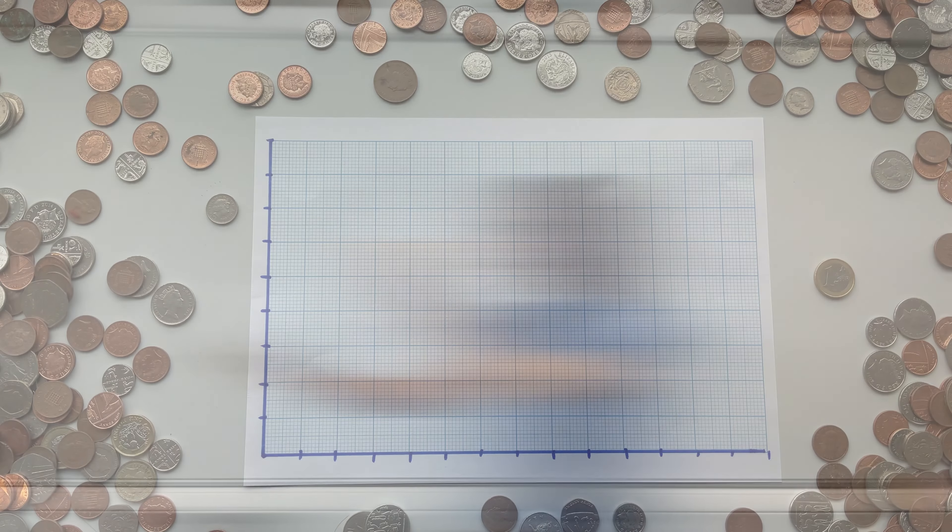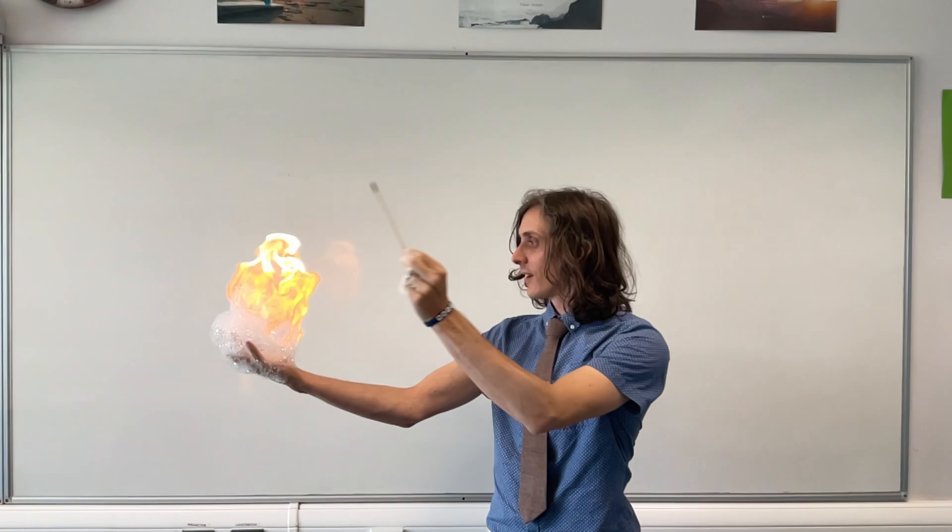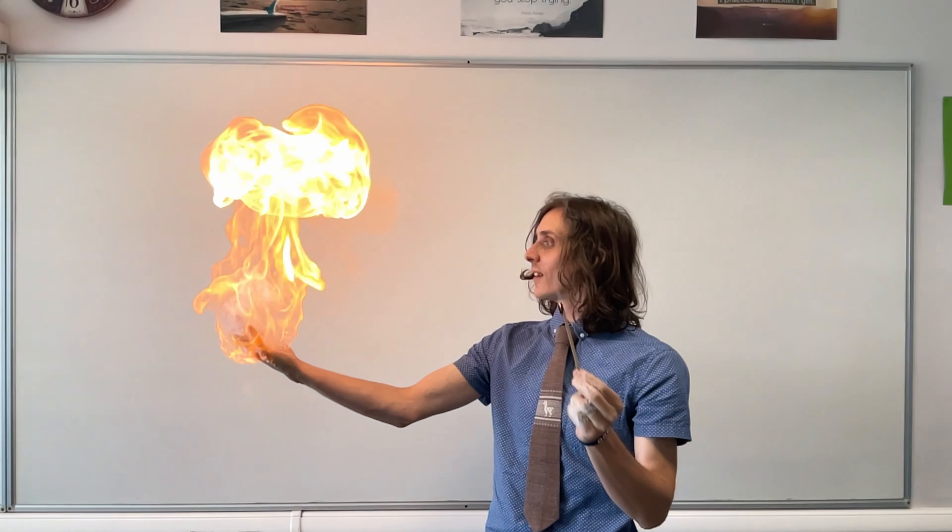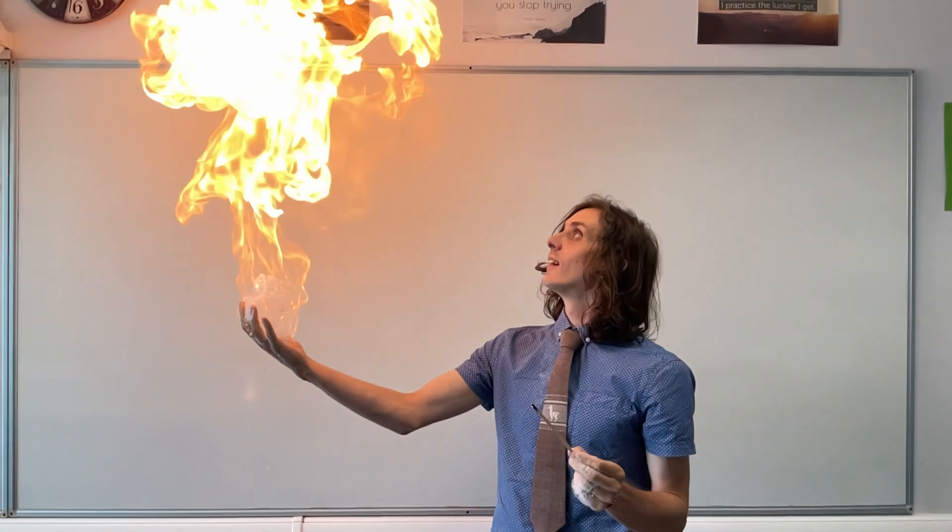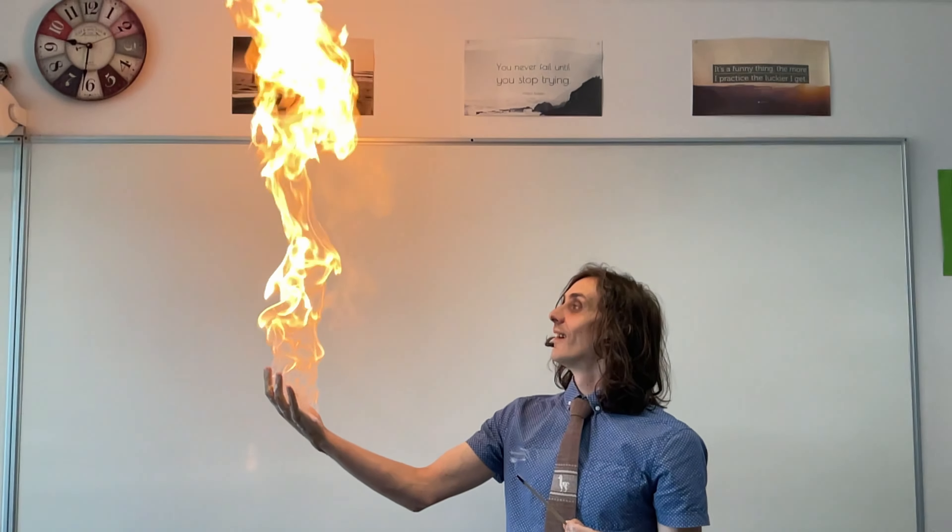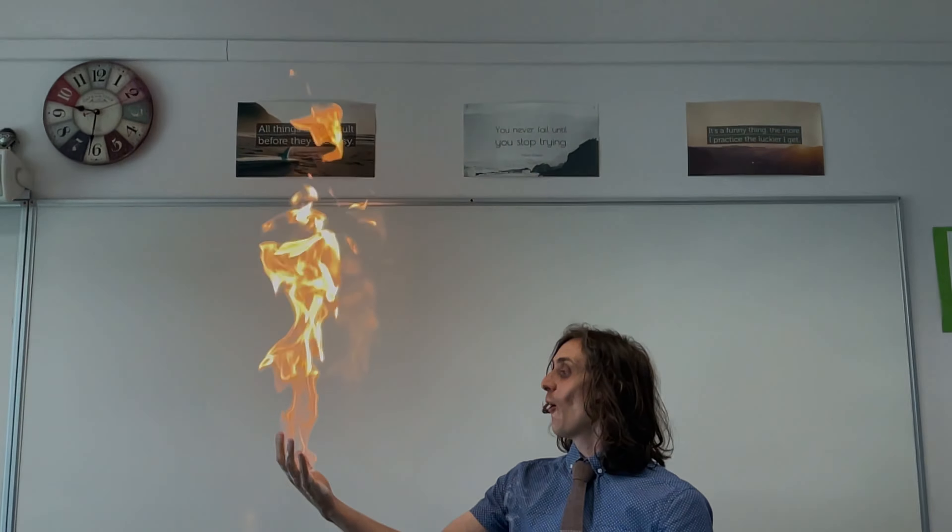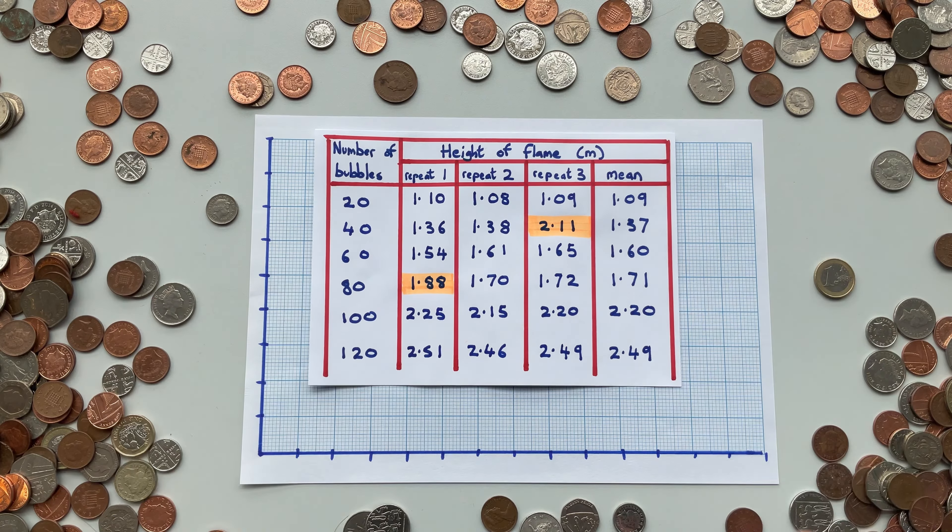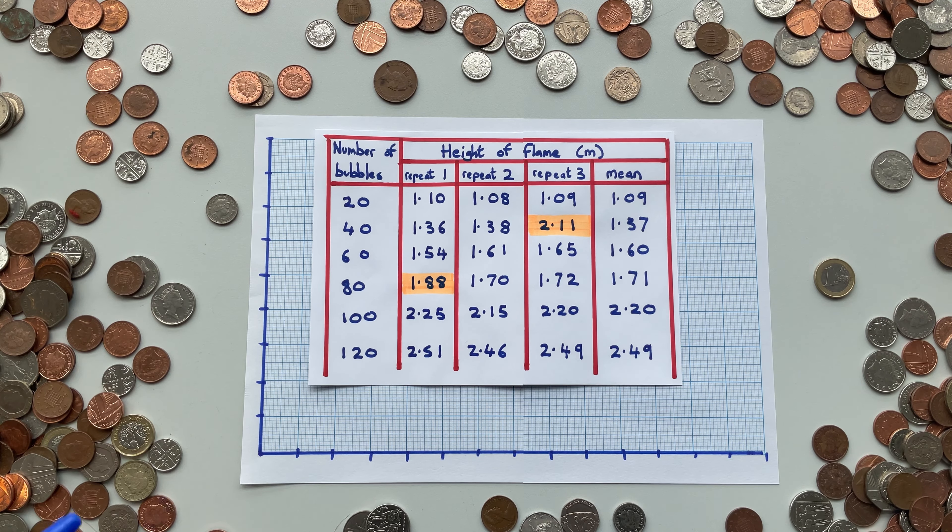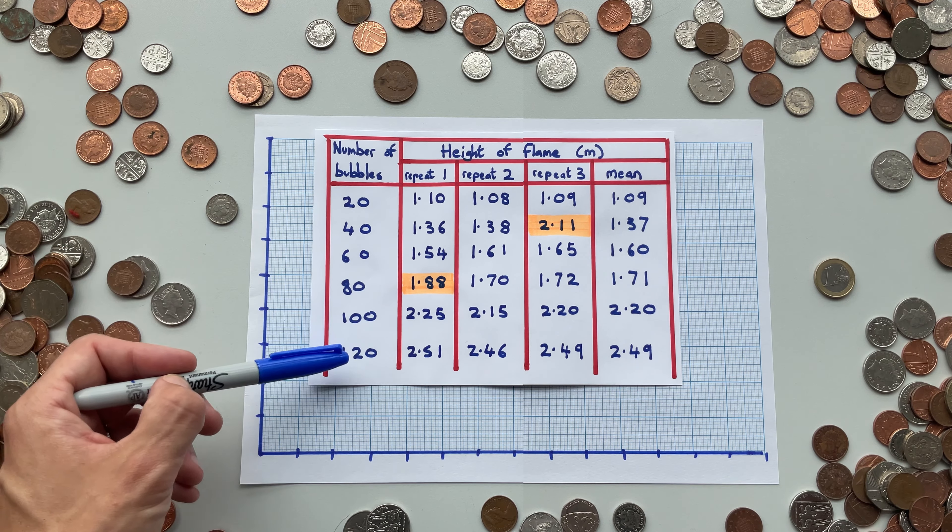We need some results from an experiment. What about an experiment to see how the number of bubbles of methane gas affects the height of the flame? The independent variable is the number of bubbles of methane, and that goes on the x-axis. If we look at the results table, the smallest number of bubbles was twenty, and the largest was one hundred twenty.